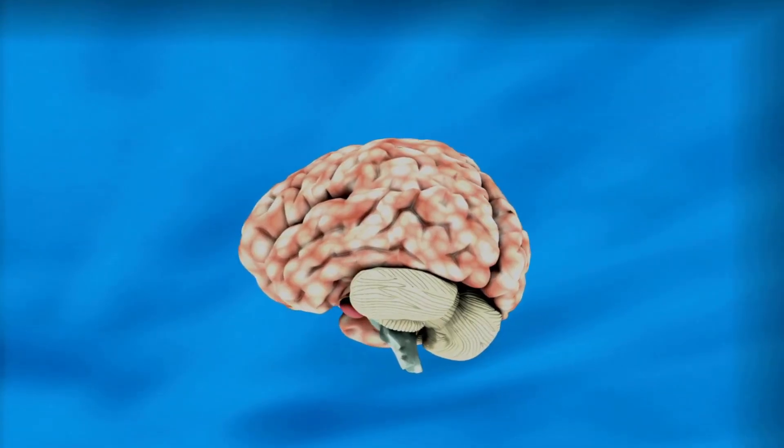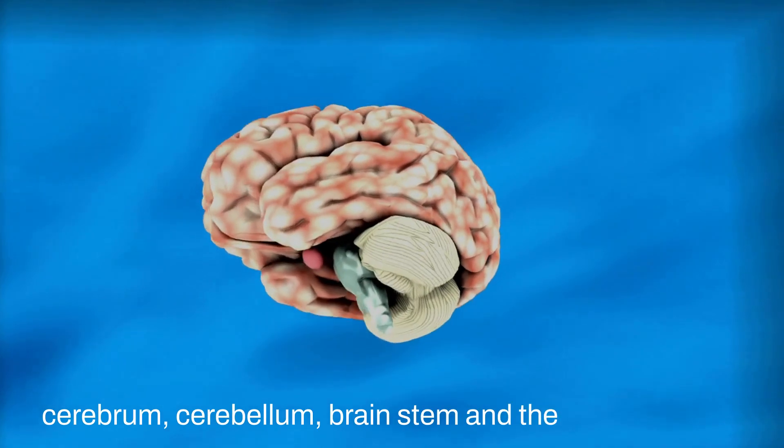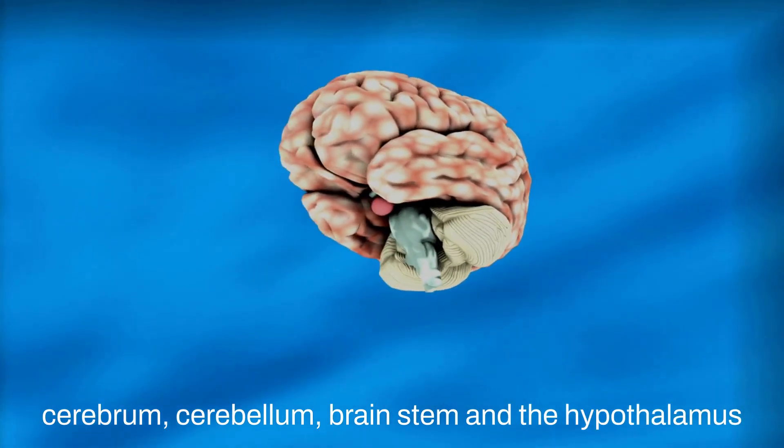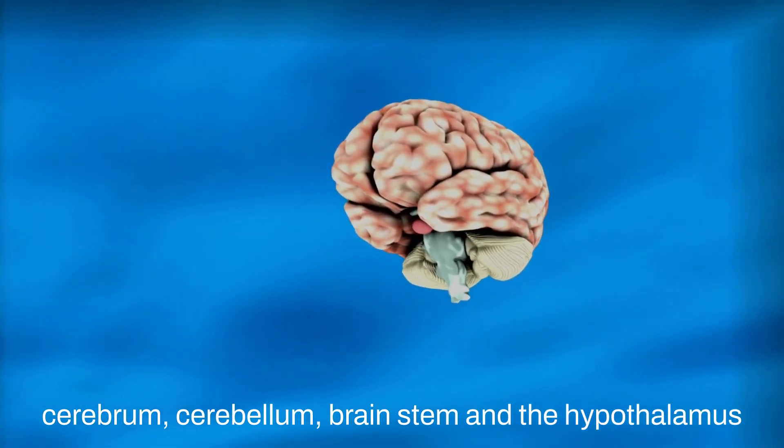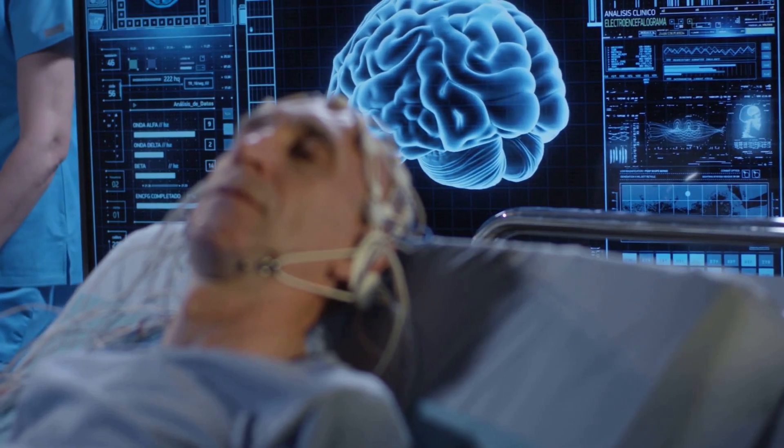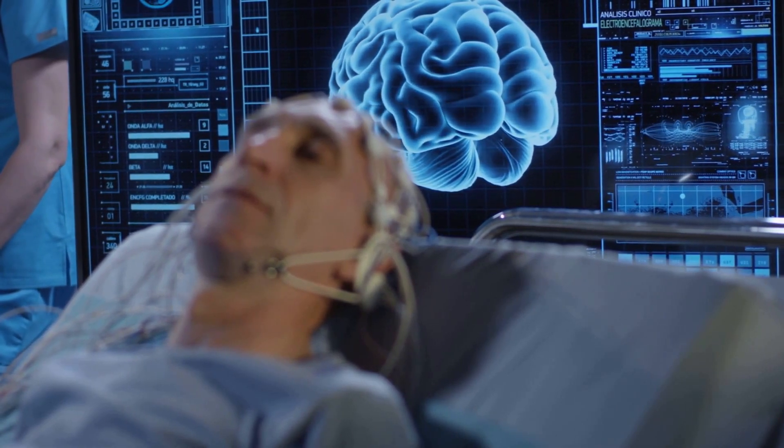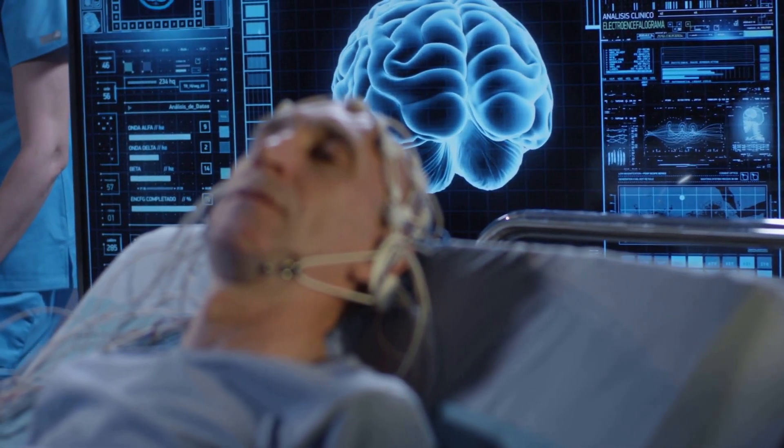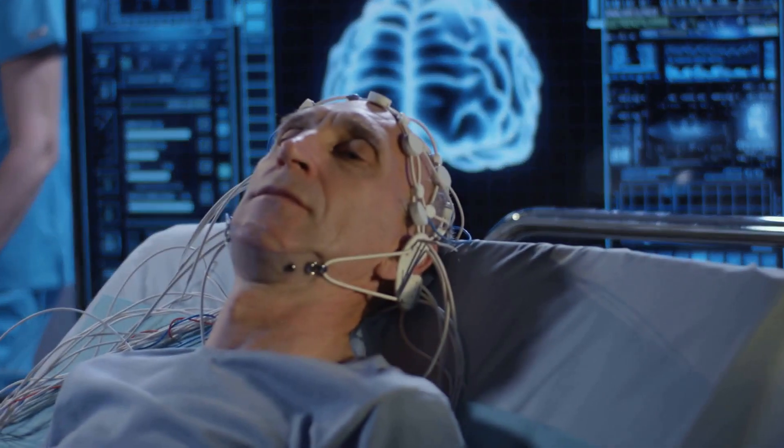The brain is composed of many different parts, including the cerebrum, cerebellum, brain stem, and the hypothalamus. Each of these is responsible for certain functions, such as controlling movement, regulating the body's temperature, and helping to regulate emotions.